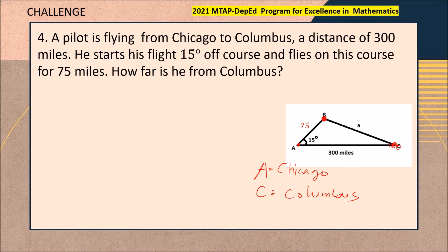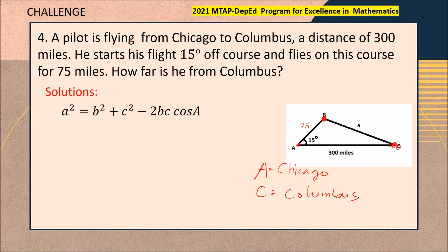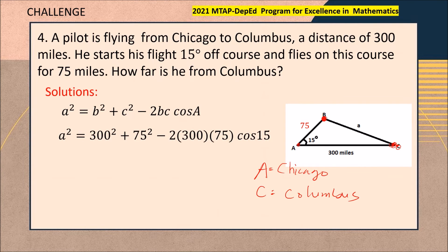Point B is his current location. Our problem is to find the distance. We can use the Law of Cosines here because we are given two sides with their corresponding values and we also have the included angle. So we are applying the Law of Cosines, where side A squared is unknown.